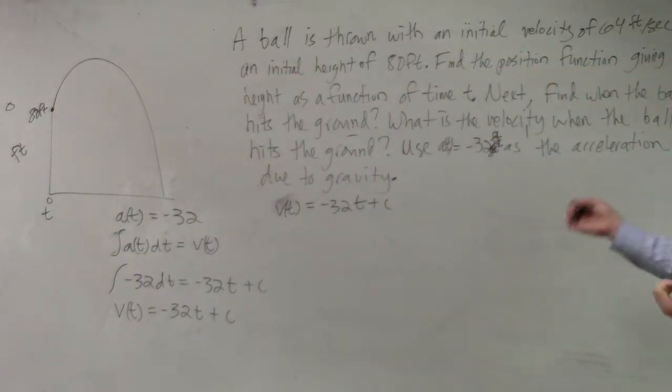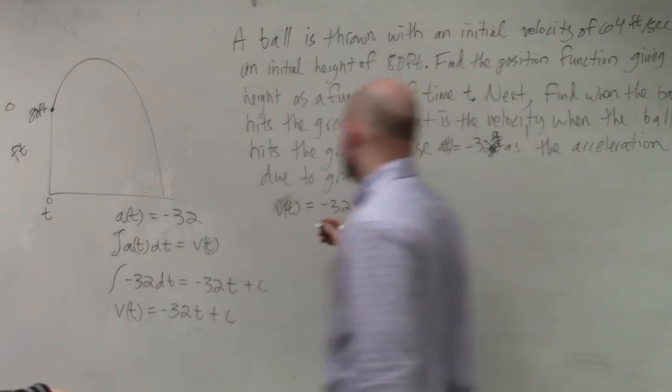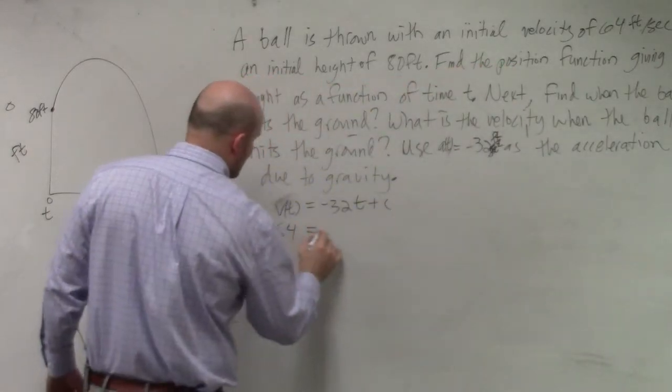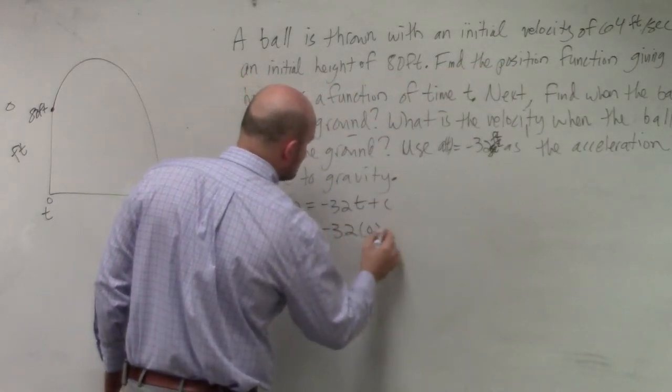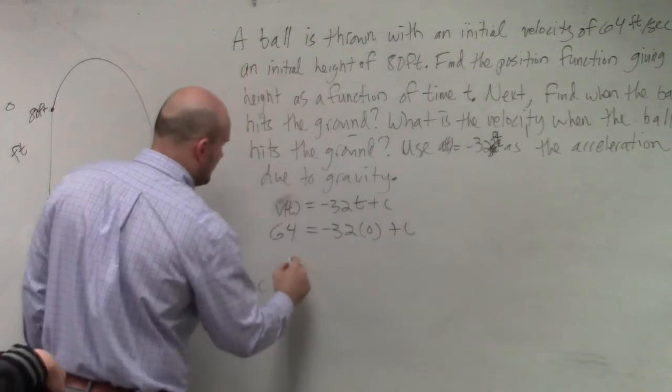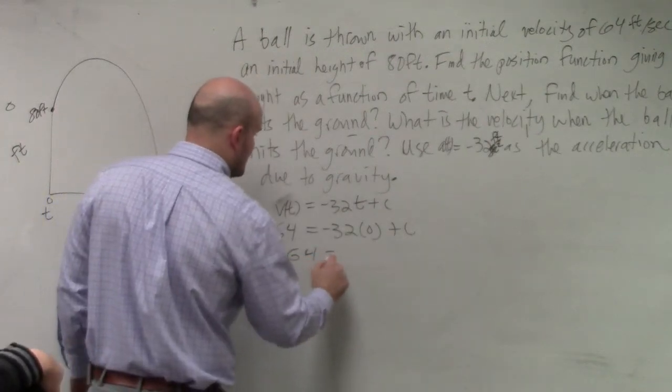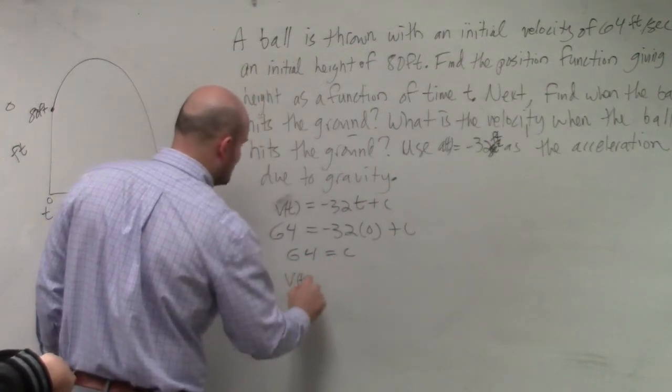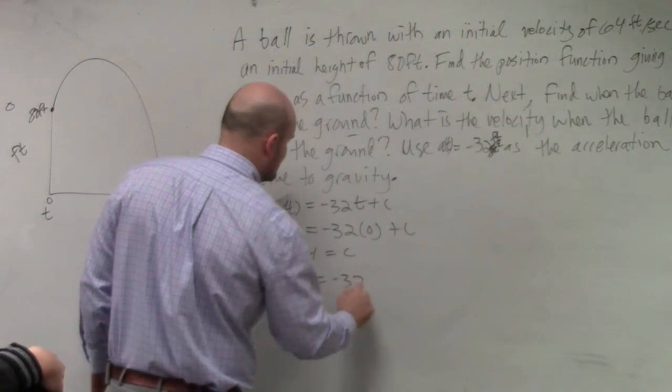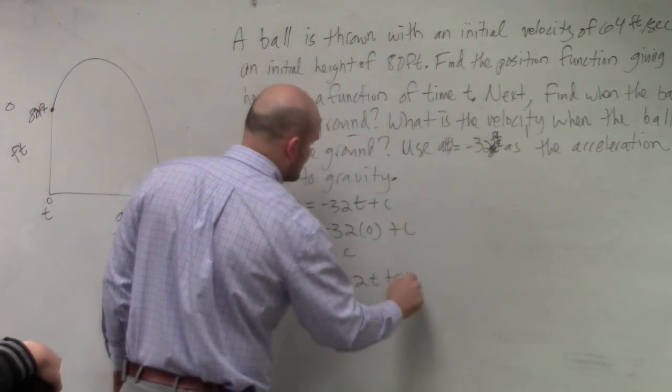Yes. And what is that? At time 0, I know the velocity is 64. So I could say 64 equals negative 32 times 0 plus c. Therefore, 64 is equal to c. So I could say my velocity function is negative 32 t plus 64.